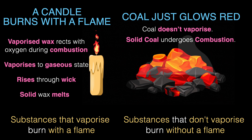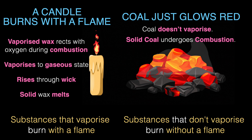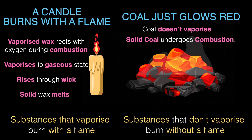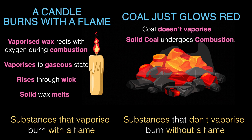Next time you see a flame, you'll know there is some vaporized substance burning in there. For example, if you see a hot red iron rod, it's glowing for sure, but it's not burning — why? Because it's not turning into a vapor. Make sense? So we can summarize what we've learned in this video.